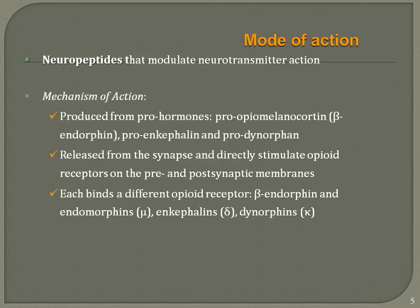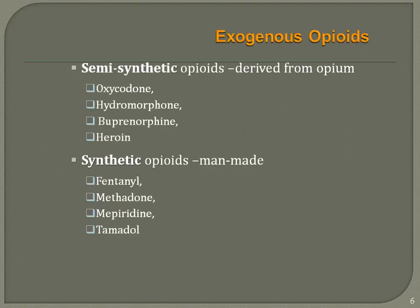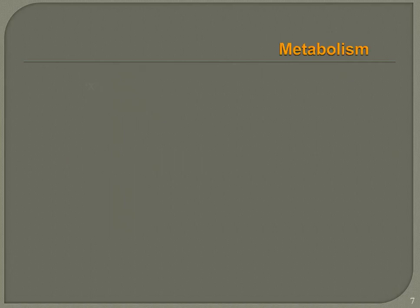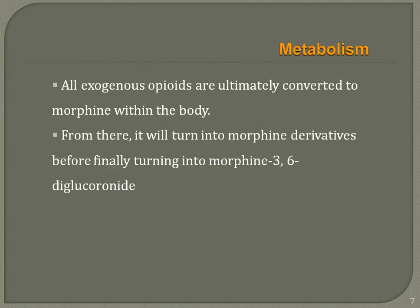Exogenous opioids are of two types. Semi-synthetic opioids are derived from opium — examples include oxycodone, hydromorphone, buprenorphine, and heroin. Synthetic opioids are made in laboratories — examples are fentanyl, methadone, meperidine, and tramadol. Exogenous opioids are ultimately converted to morphine or morphine derivatives within the body.